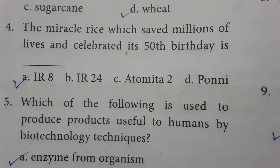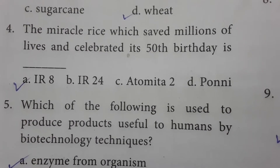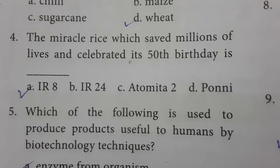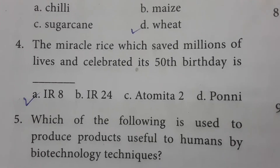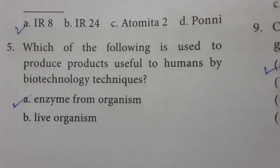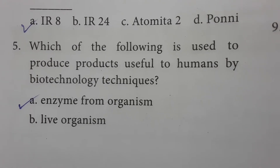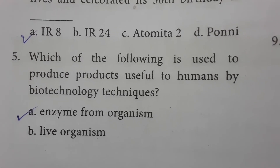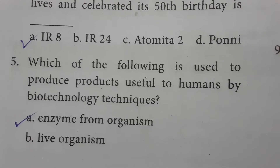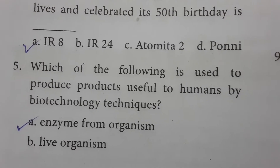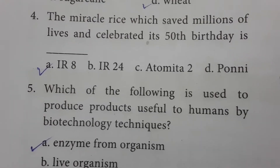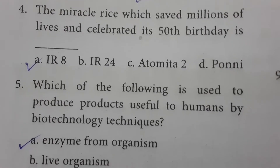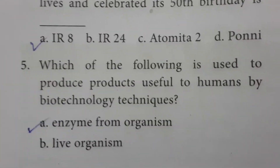The miracle rice which saved millions of lives and celebrated its 50th birthday is IR8. Which of the following is used to produce products useful to humans by biotechnology techniques? The answer is enzymes from organisms. Biotechnology in humans includes producing hormones — for example, insulin is one hormone that is also an enzyme.